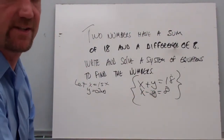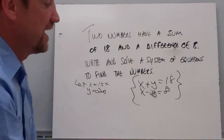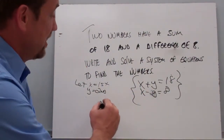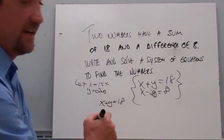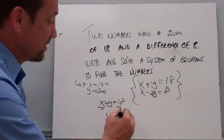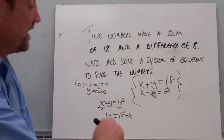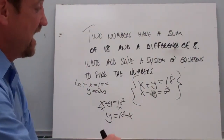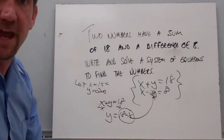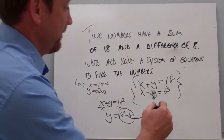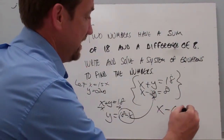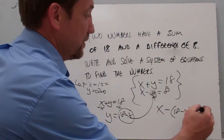Now if we're going to solve this system by substitution, we're going to need to get one of these variables by itself. It's probably going to be easiest to get rid of this x. So if I took the equation x plus y equals 18, and subtract x from both sides, I can say that y equals 18 minus x. And since y is the same thing as 18 minus x, I can take this 18 minus x and plug it in for that y. So now we have x minus, and instead of saying y, we're going to say 18 minus x equals 8.